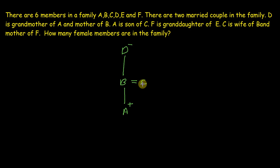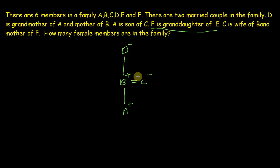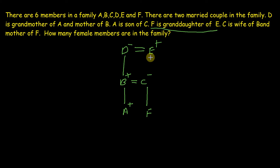The next line is F is granddaughter of E, but we are not sure where E fits in the family tree, so we underline this statement for now. The next line says C is wife of B and mother of F — so we put a minus sign on C and a plus sign on B, and F comes as a child of C. Revisiting our underlined statement, F is granddaughter of E, so E should be the grandfather of F. There are two married couples. The answer to how many female members are in the family is three.